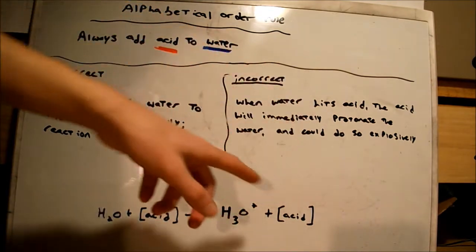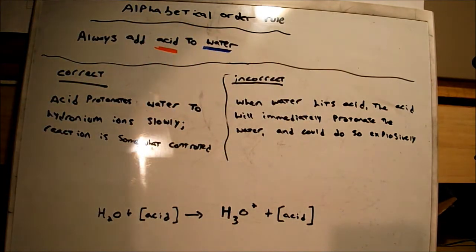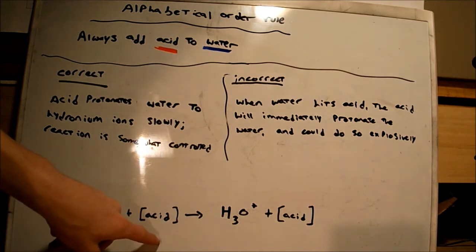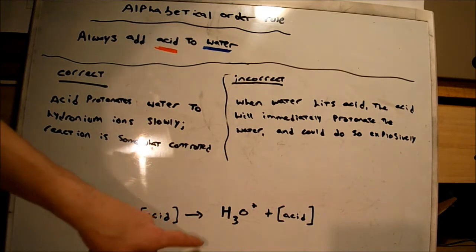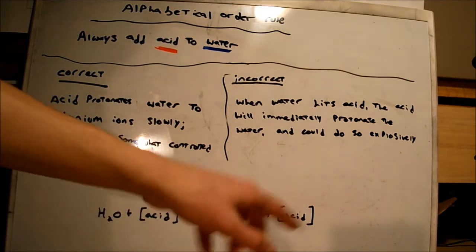If you add water to acid, the acid will immediately try to protonate the water. It will do the same thing. That's H₂O plus your acid equals H₃O⁺ plus your acid which is now diluted.